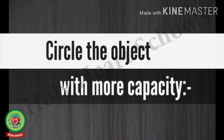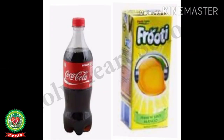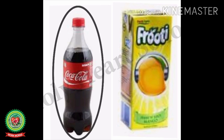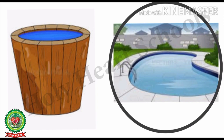The exercise is to circle the object with more capacity. Here a picture of a cold drink and a fruity is given, and we will see which of them has more capacity. The answer is cold drink, so we will circle it. In the next example, you can see the picture of a tub and a swimming pool. The answer is swimming pool, so we will circle the swimming pool.